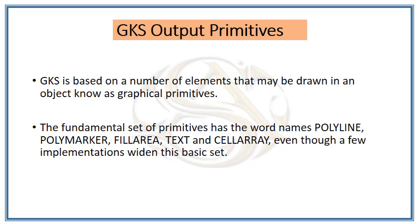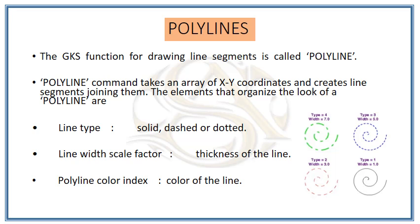GKS output primitives are based on a number of elements that may be drawn in an object, known as graphical primitives. The fundamental set of primitives includes polyline, polymarker, fill area, text, and cell array. Polyline is the line used to draw; the polyline command takes an array of x and y coordinates and creates line segments joining them.